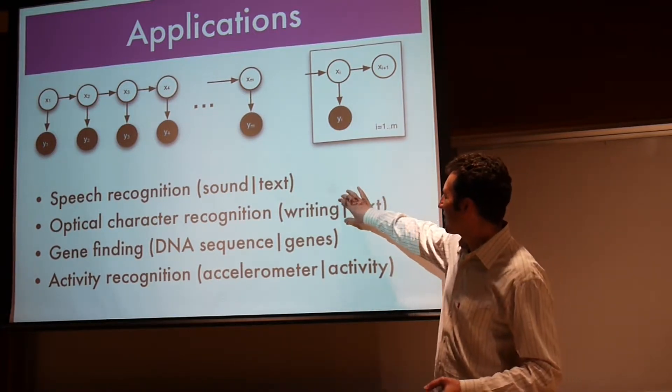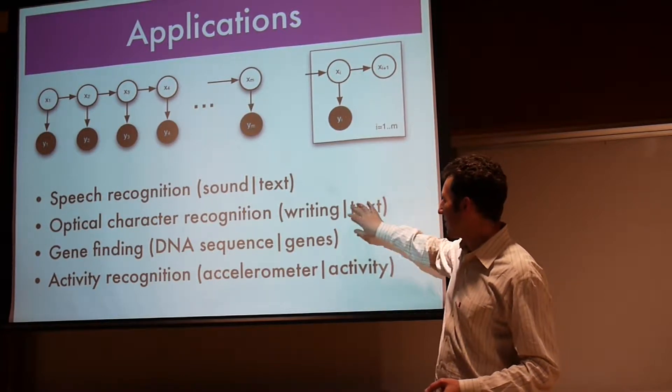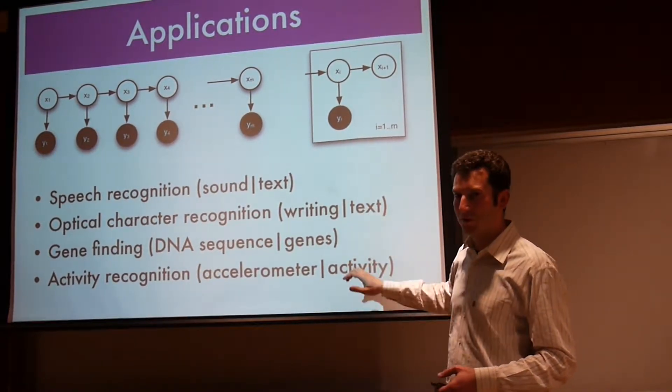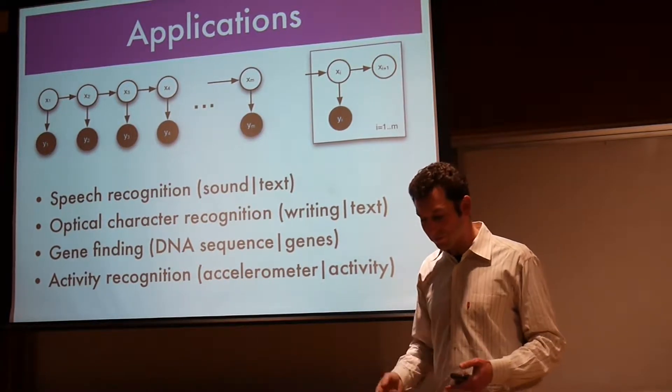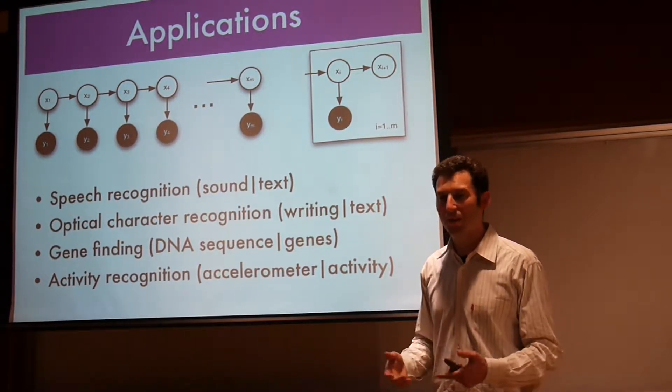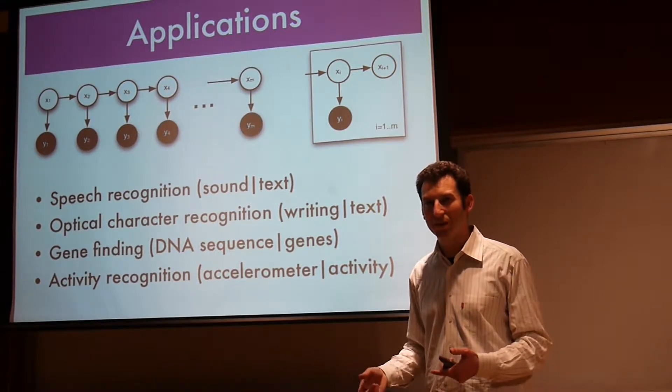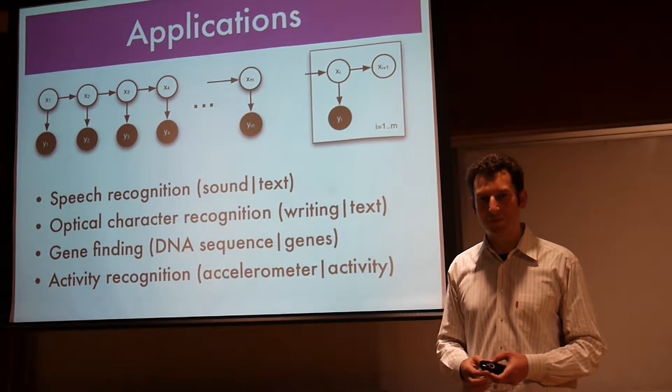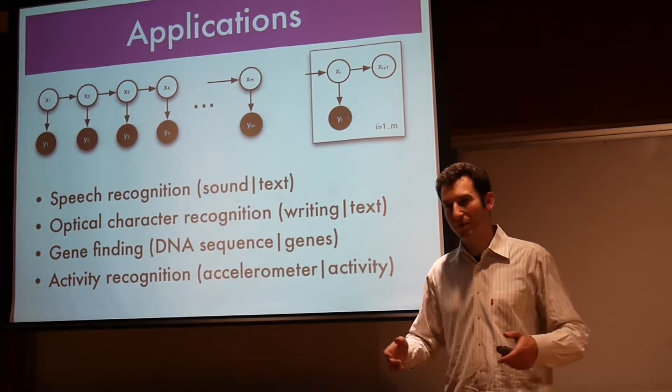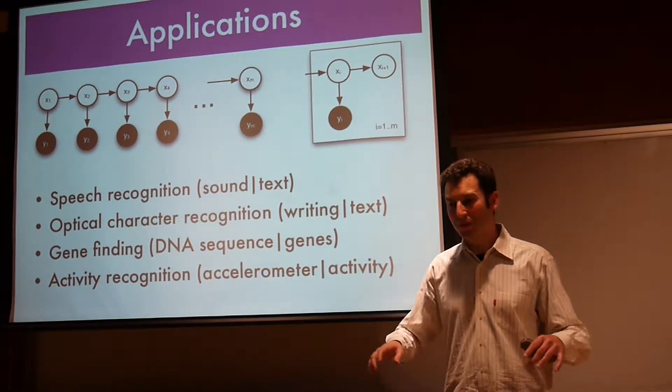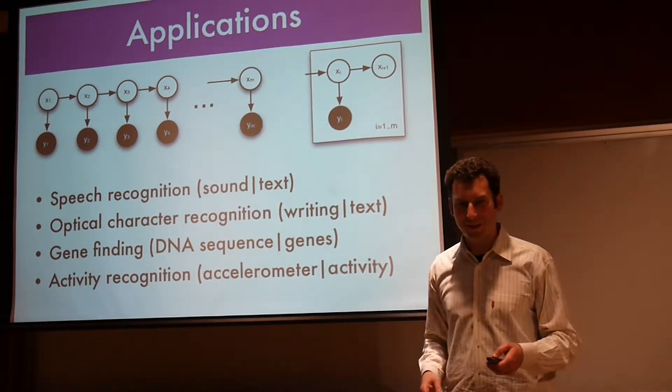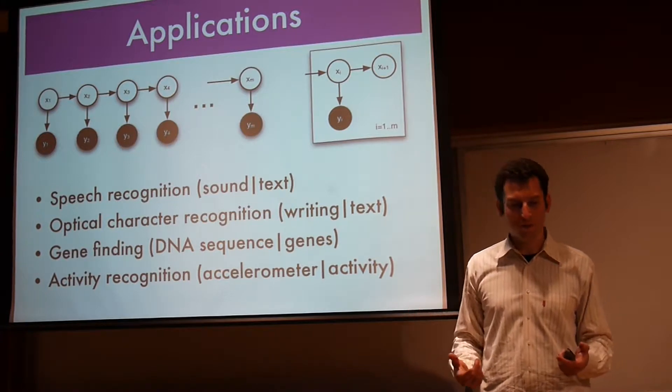Optical character recognition is another one. If you go to your bank and submit your check at the ATM, you need a system that actually parses the check, figures out which amount it is and where it should go to. Usually it's a reasonably fancy hidden Markov model that builds this. Gene finding is another popular application. You have a genetic sequence and you don't really know what the genes are, but they usually have a start and a stop sequence.